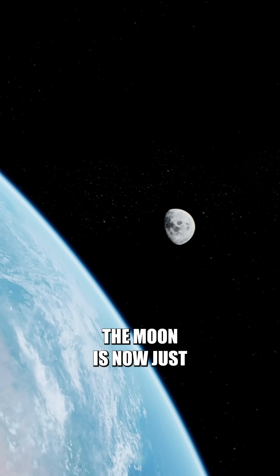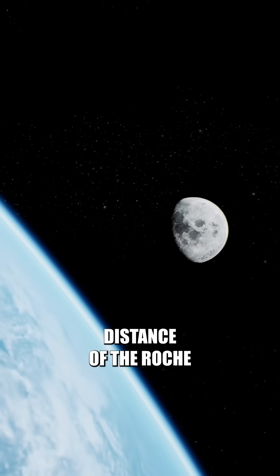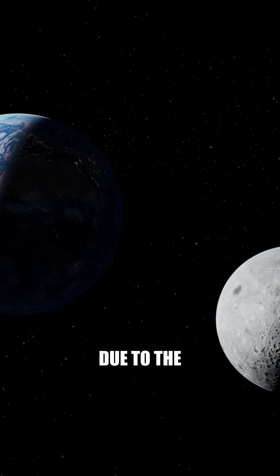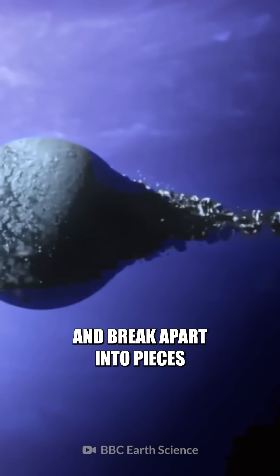Okay, the Moon is now just 18,000 kilometers away, which happens to be the approximate distance of the Roche limit. Due to the gravitational shift, the Moon would start to rupture and break apart into pieces.